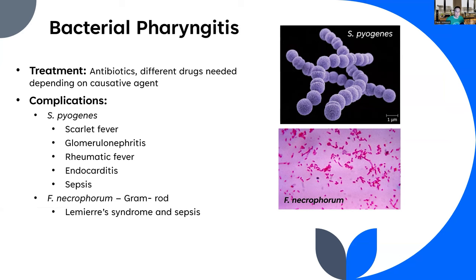Complications of Streptococcus pyogenes infection include scarlet fever — which actually killed people historically — glomerulonephritis, an inflammation of the kidneys, and rheumatic fever, which can cause damage and inflammation to the heart. More serious complications include endocarditis and sepsis. Endocarditis, rheumatic fever, and glomerulonephritis are often the result of an untreated streptococcal infection.